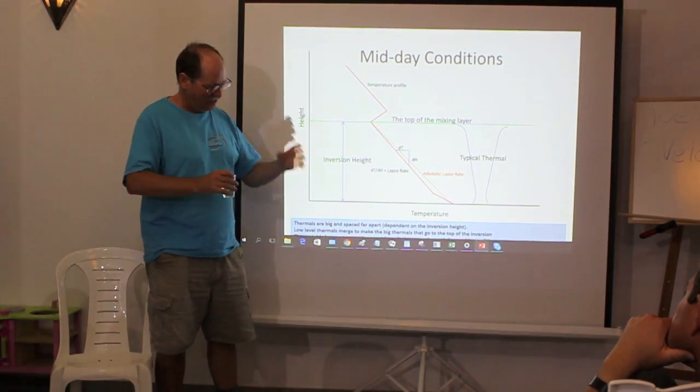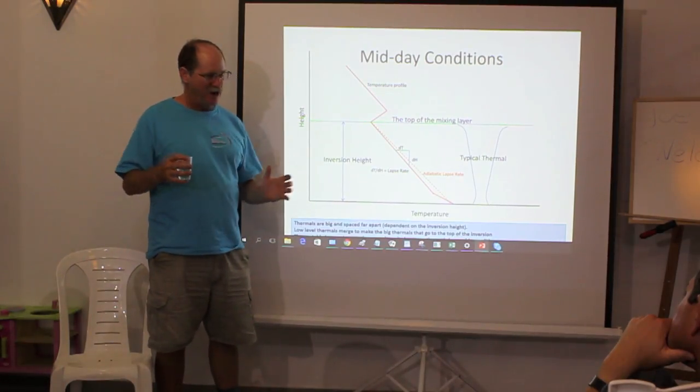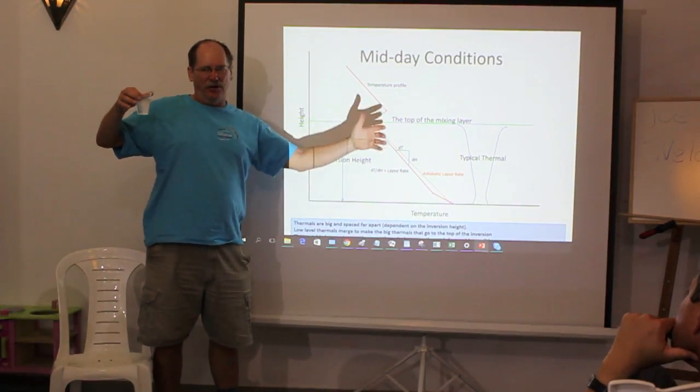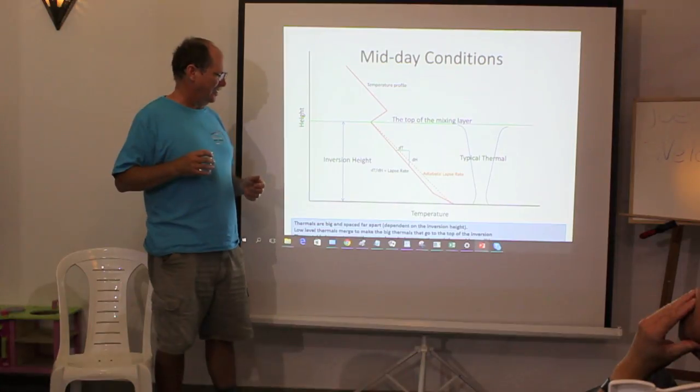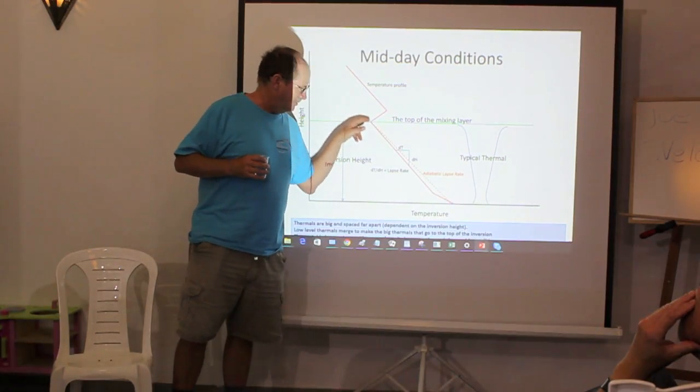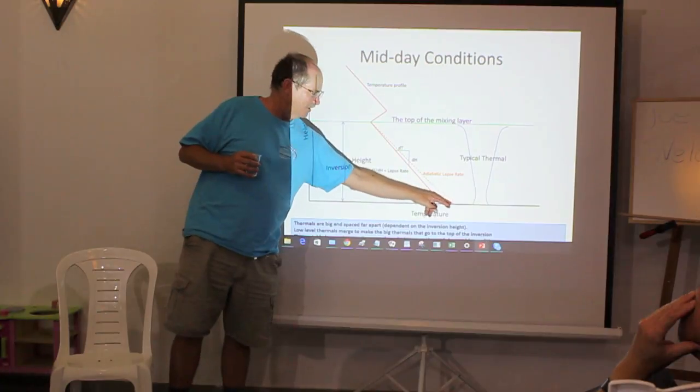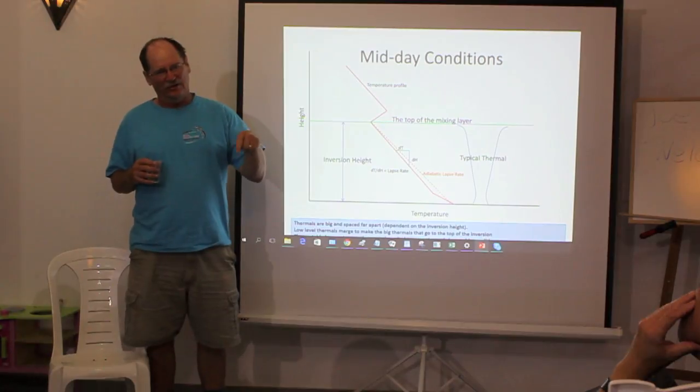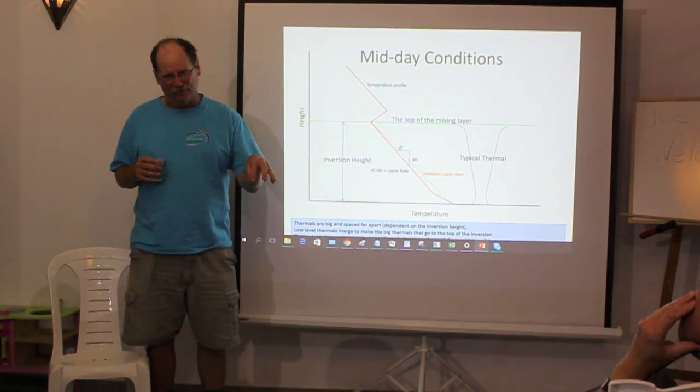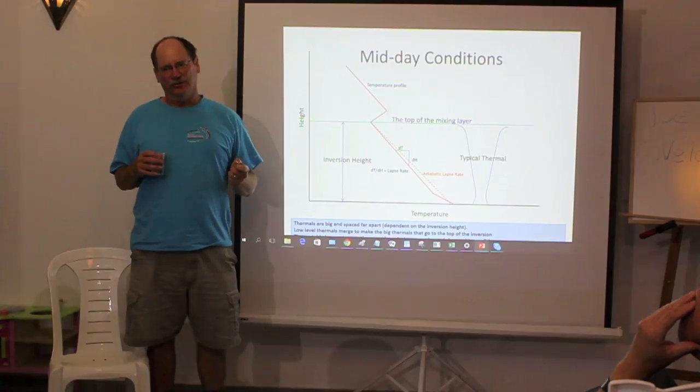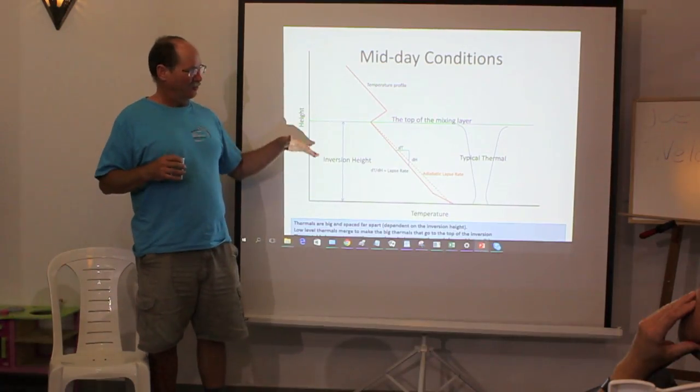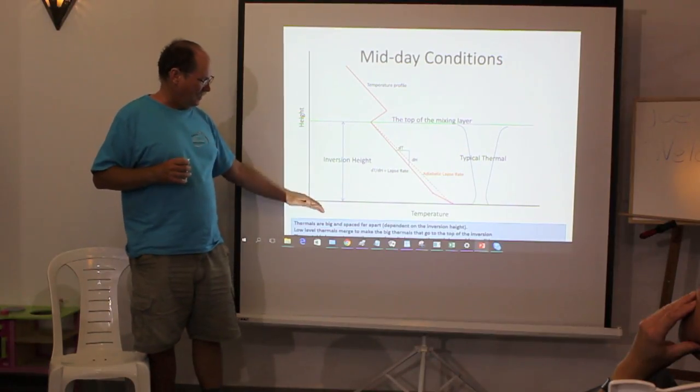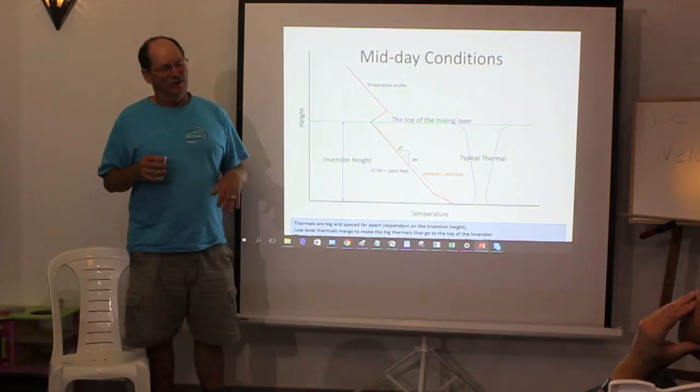Because now it's not little thermals scattered about. All of a sudden, bam! Once it breaks through that morning inversion, you get big thermals far apart. The full-scale soaring guys call that - they can take a plot and when they extrapolate the temperature profile down to the ground, and when the ground air temperature gets to a certain point, they call it the trigger temperature. That's when all of a sudden they get the real thermals that the full-scale sailplanes want to play with.